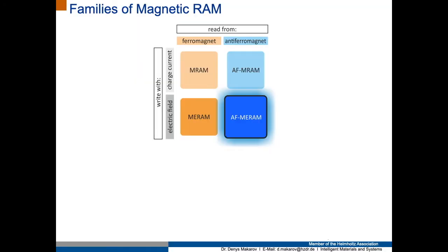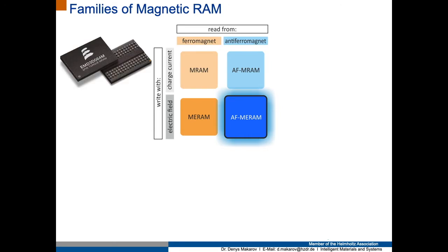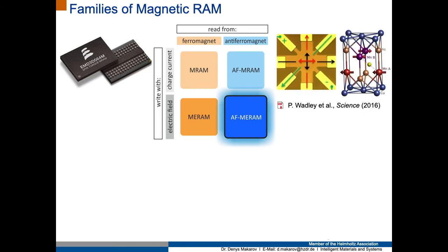On the technological side, our motivation comes from magnetic random access memory. One of the possible classifications of families of MRAM is shown here. It depends on from which material you read out the information and how you write the information. For example, if you use ferromagnets to read out the information and charge current to write the information, you will be in the realm of conventional MRAM, which is a commercially available product. There is also an antiferromagnetic counterpart of MRAM where you use charge current to write information into, for example, a metallic antiferromagnet, and read out the information from a metallic antiferromagnet.